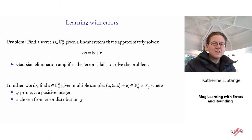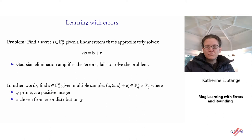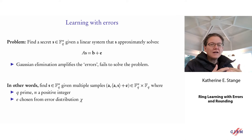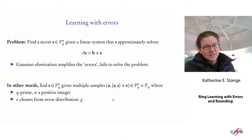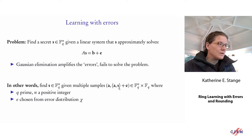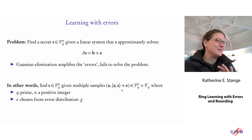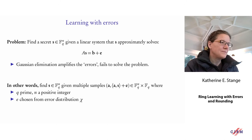The error must be small enough to mean something, but not so small you could find it by guessing. With just one sample there's no unique solution s, but given enough samples — an overdetermined system — the requirement that e be small leads to at most one possible solution s. Computationally you'd have to search through all possible short errors, and in high dimension even a small box has too much in it.